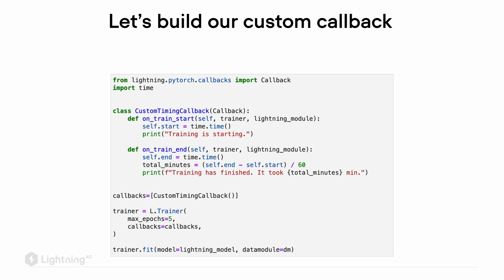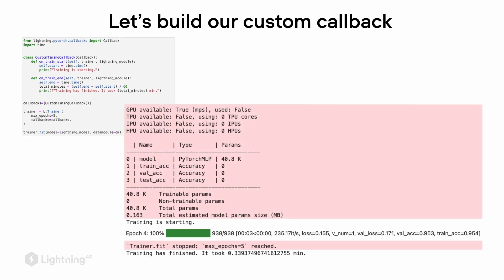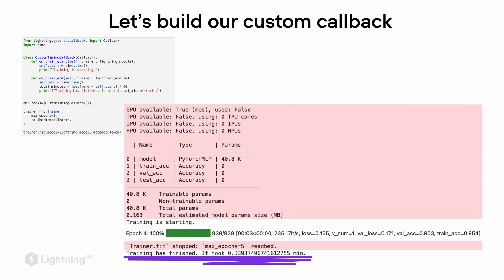Here's an example of how it looks like in action. We define the callback, plug it into the Trainer, and then call Trainer.fit. As we can see on the right-hand side, when the training is starting, it will also print the phrase 'training is starting.' And then once the training has finished, it will print the total time that has passed since we started the training.